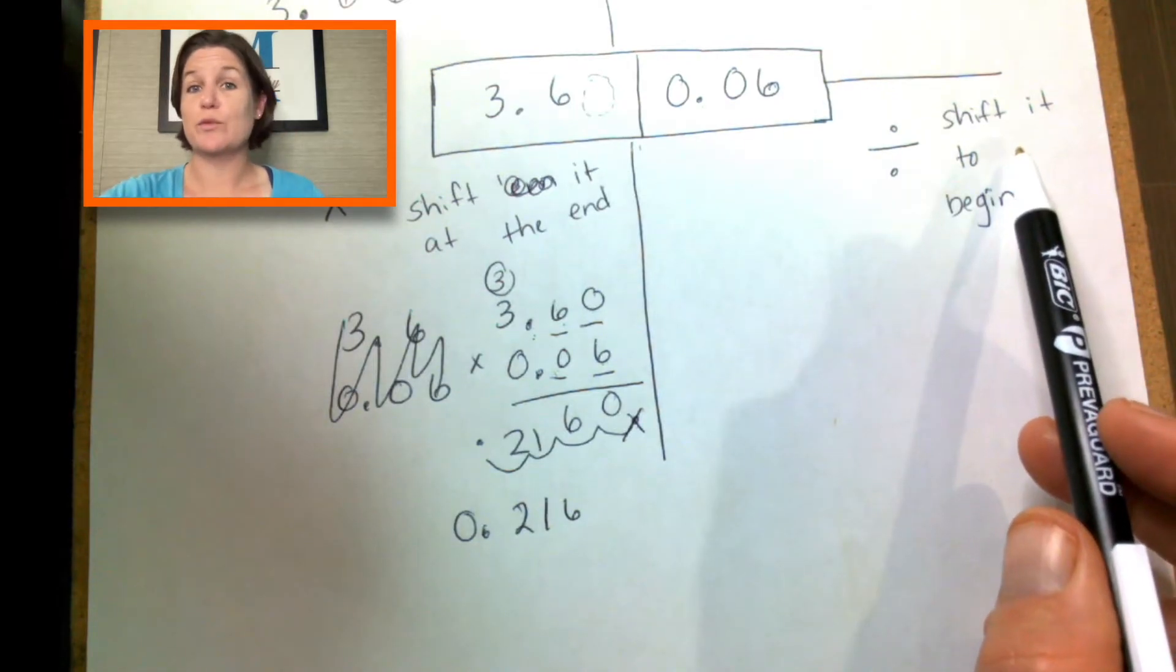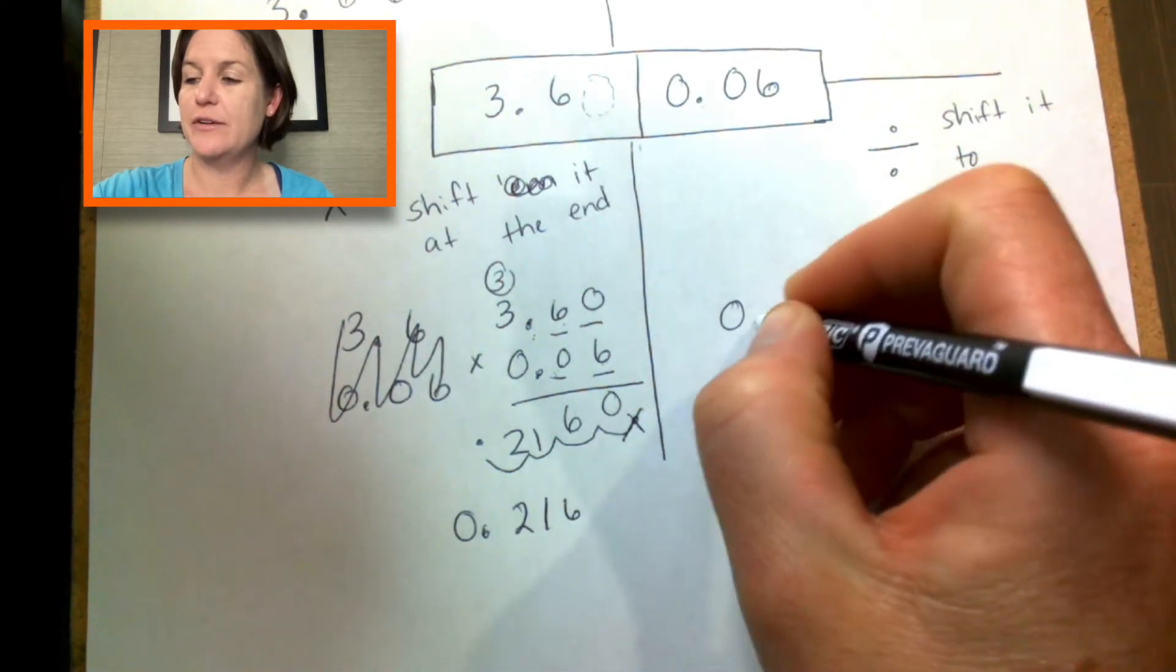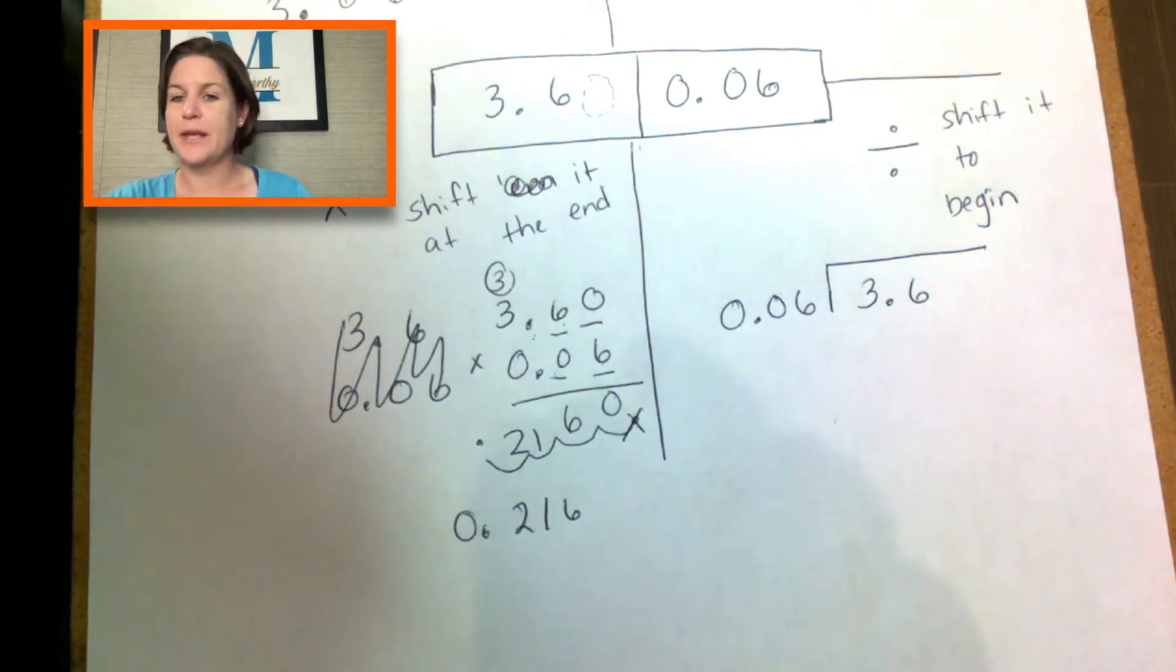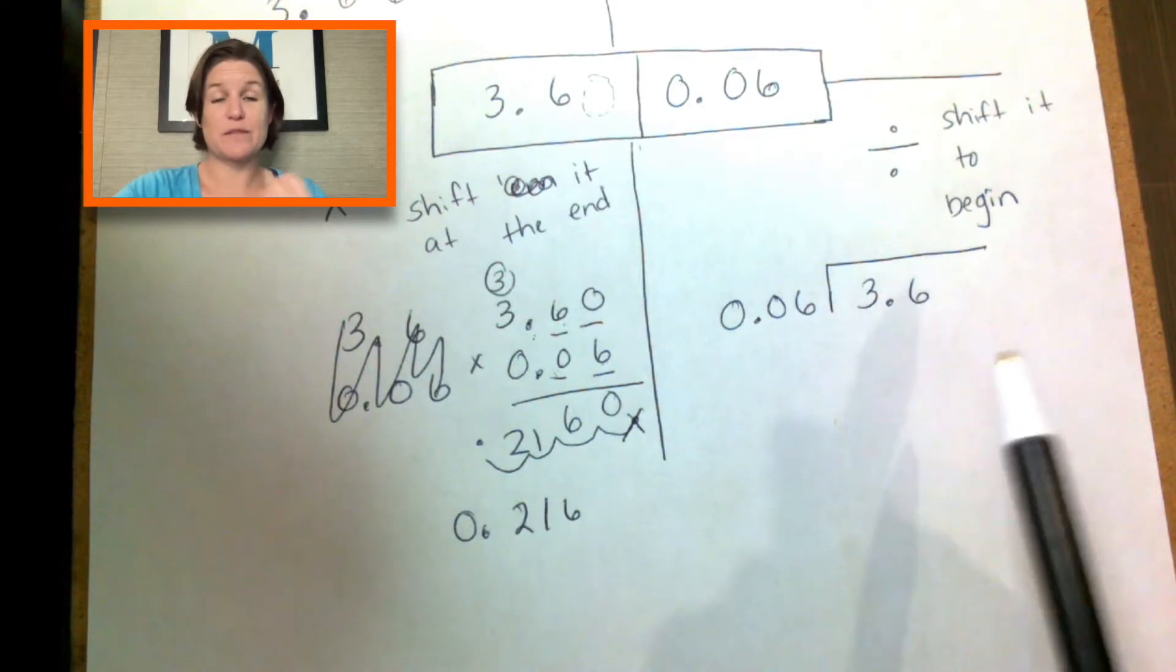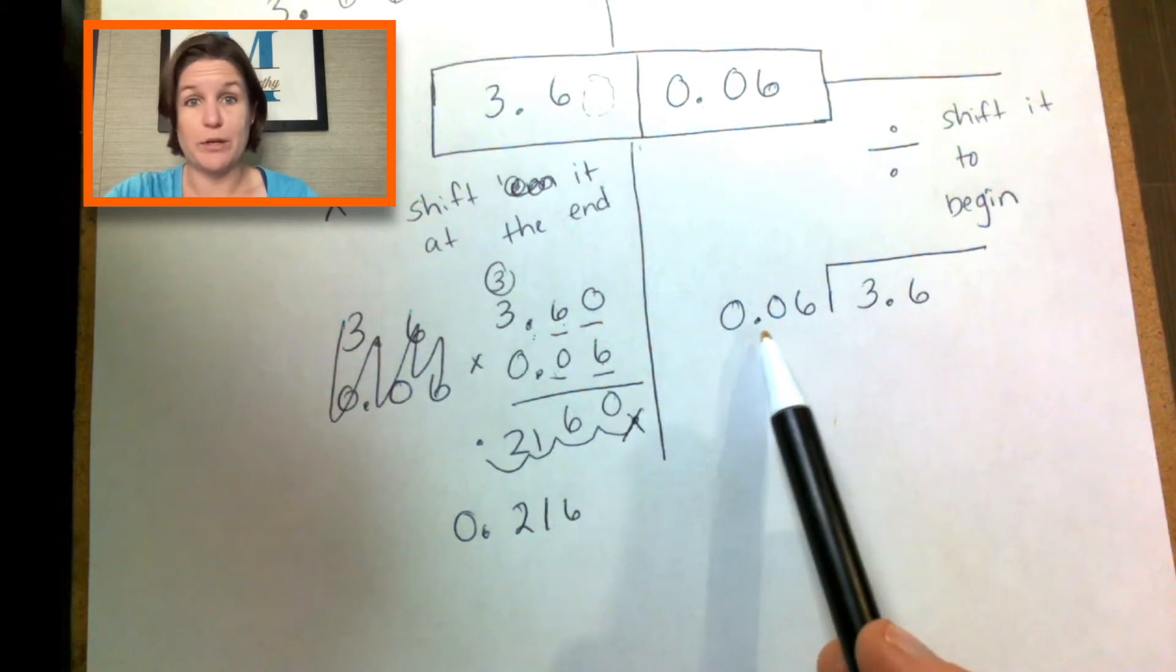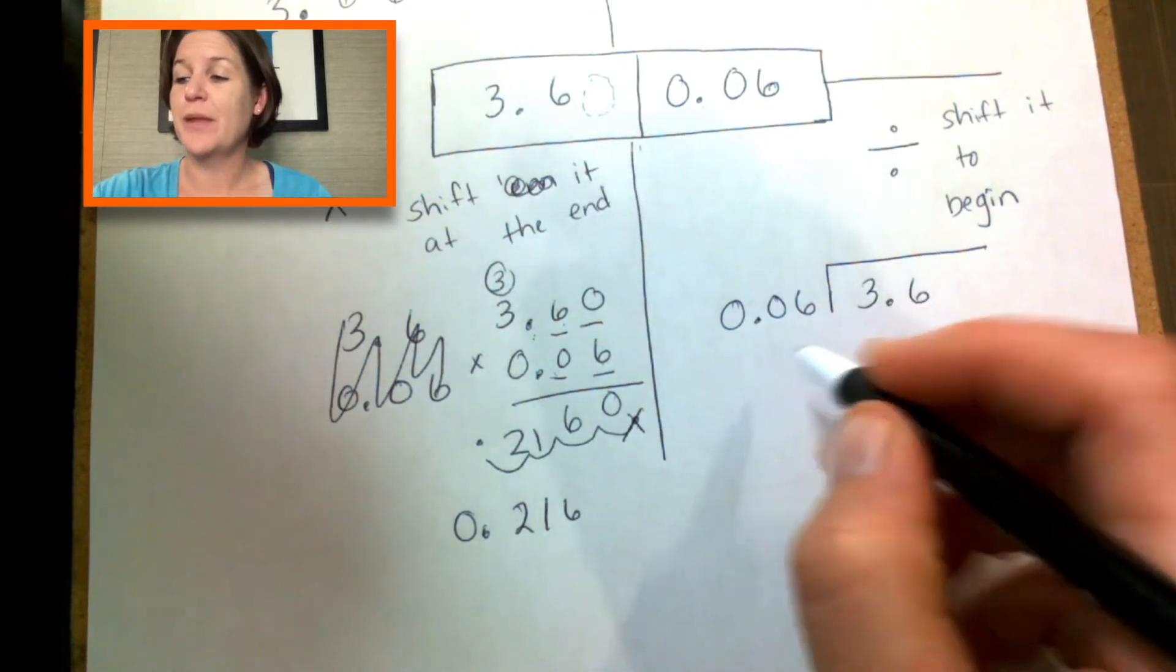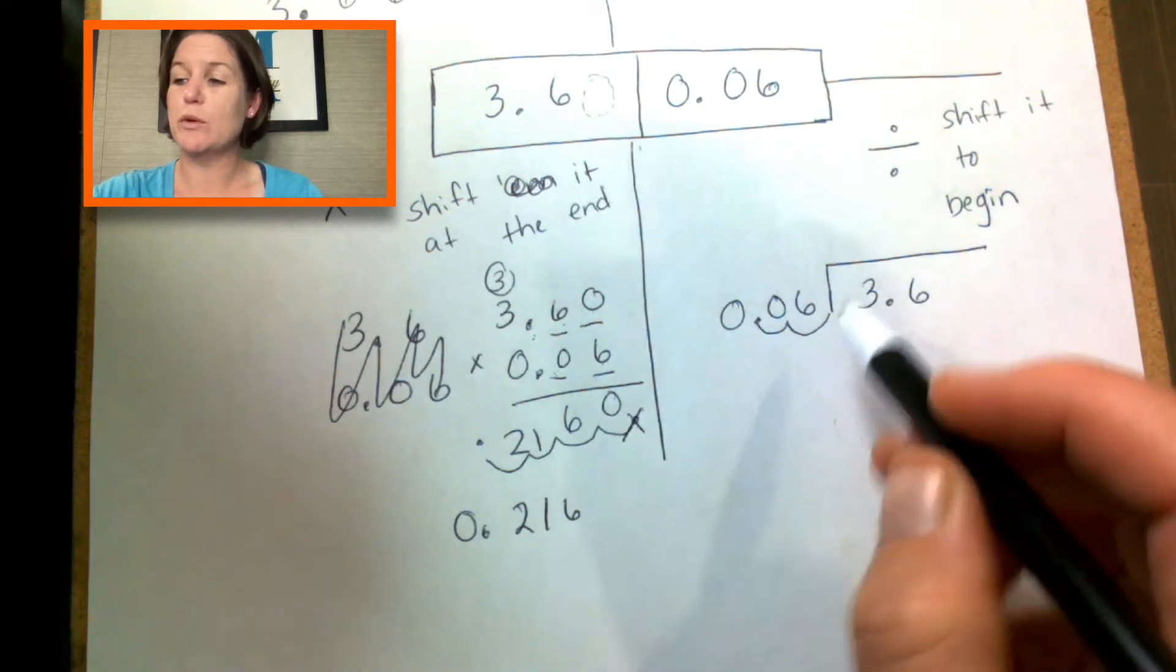So again, when you multiply with decimals, you pretend like they're not there and you shift it at the end. When we divide with decimals, we're going to shift it to begin. So I'm going to go ahead and put my divisor out here. I'm going to call the 0.06 that divisor and our dividend is going to go inside. Now, before we even get started, we're going to go ahead and shift our decimal. What do I mean by that? Shifting the decimal to begin? Well, we're going to look at the divisor and the divisor needs to be a whole number. If it's not a whole number, I teach students that it's not a whole and we need to make it into a whole number.